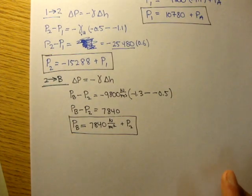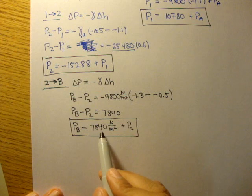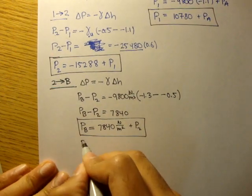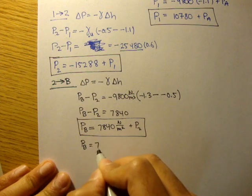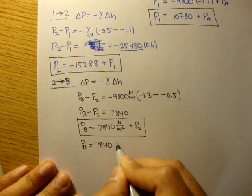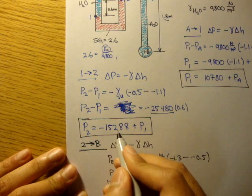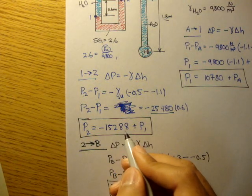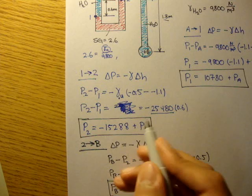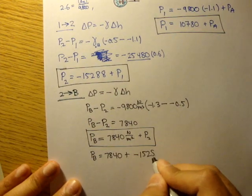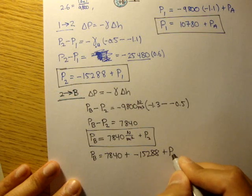So P_B is equal to 7840 plus P_2. What's P_2? It's negative 15,288 plus P_1. So plus negative 15,288 plus P_1.